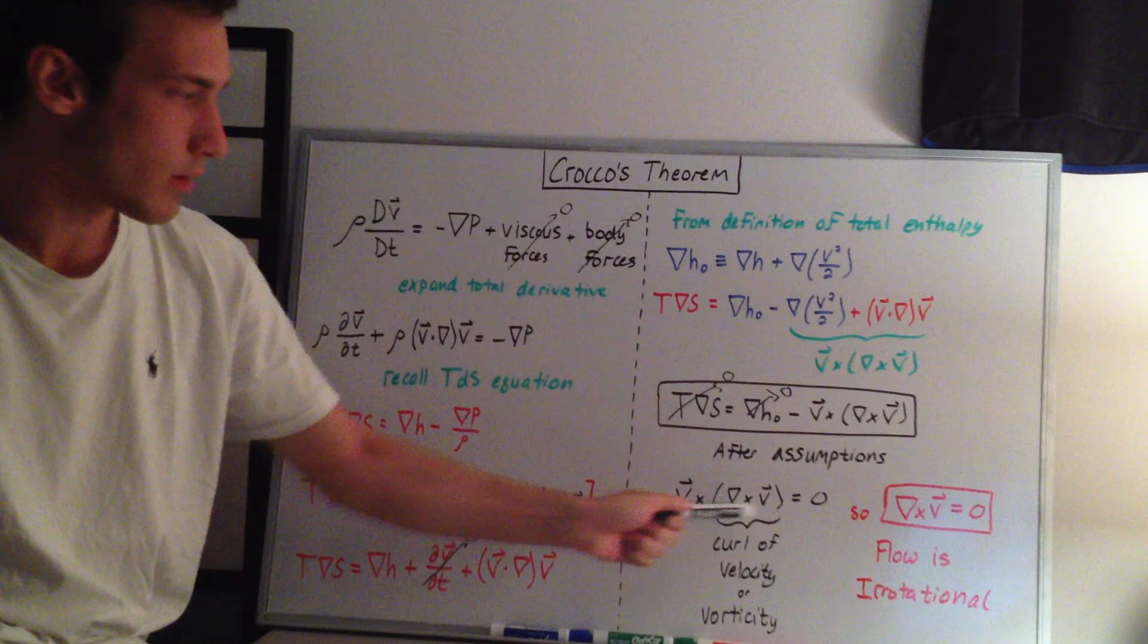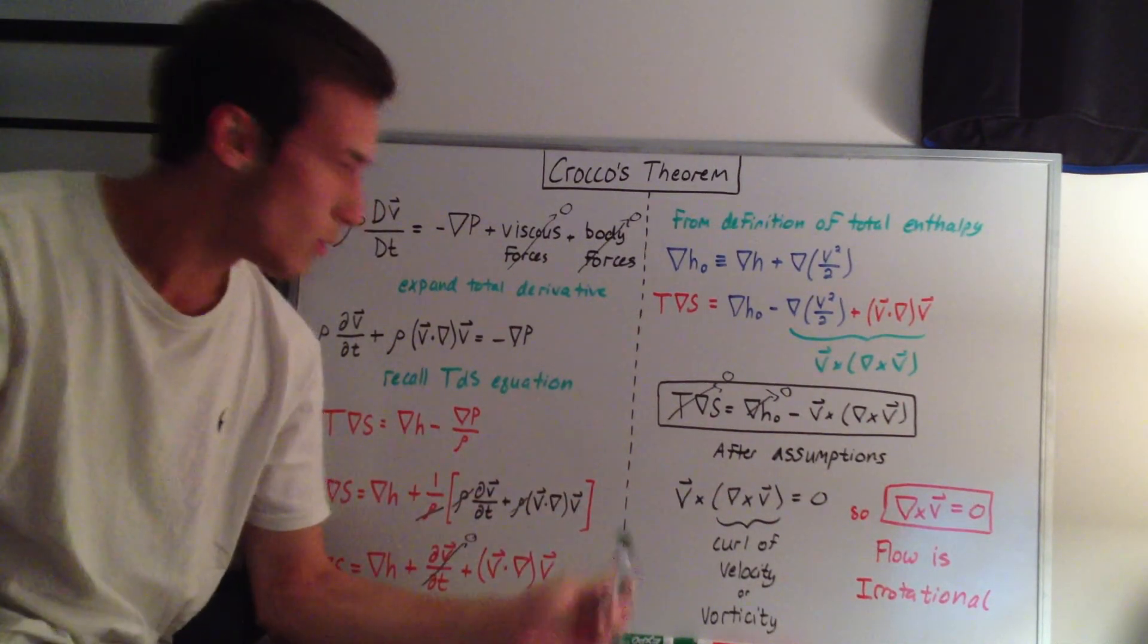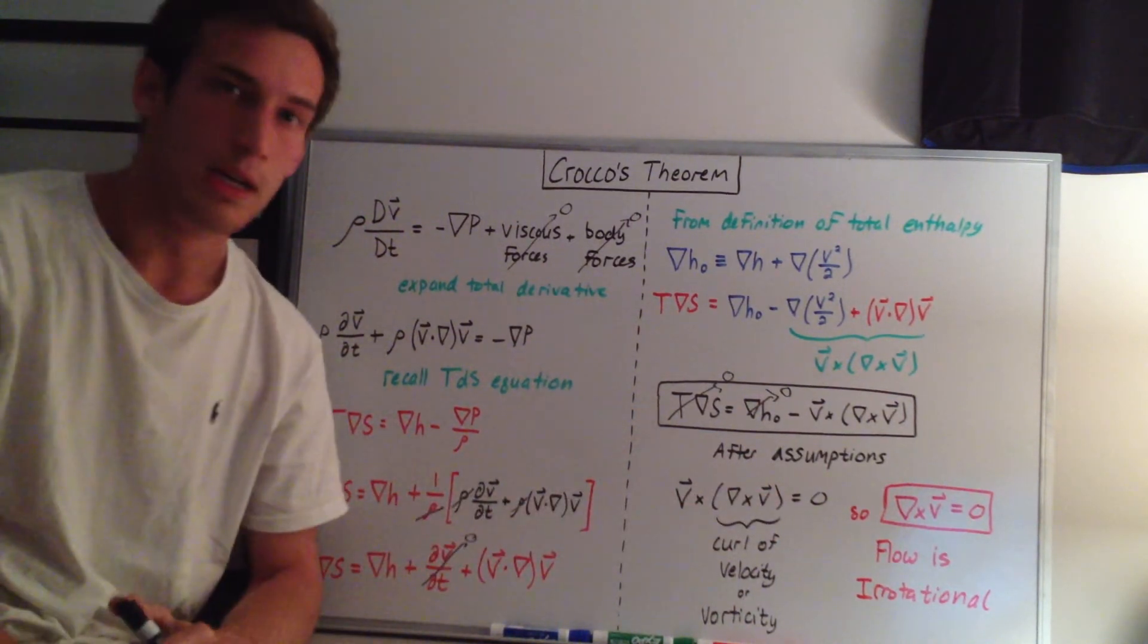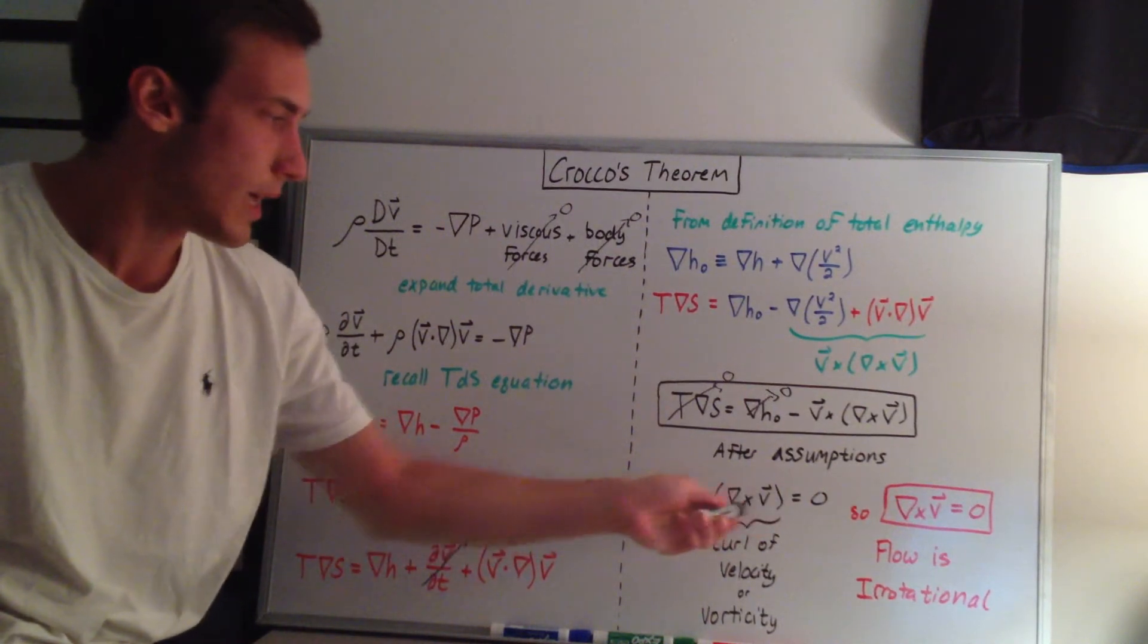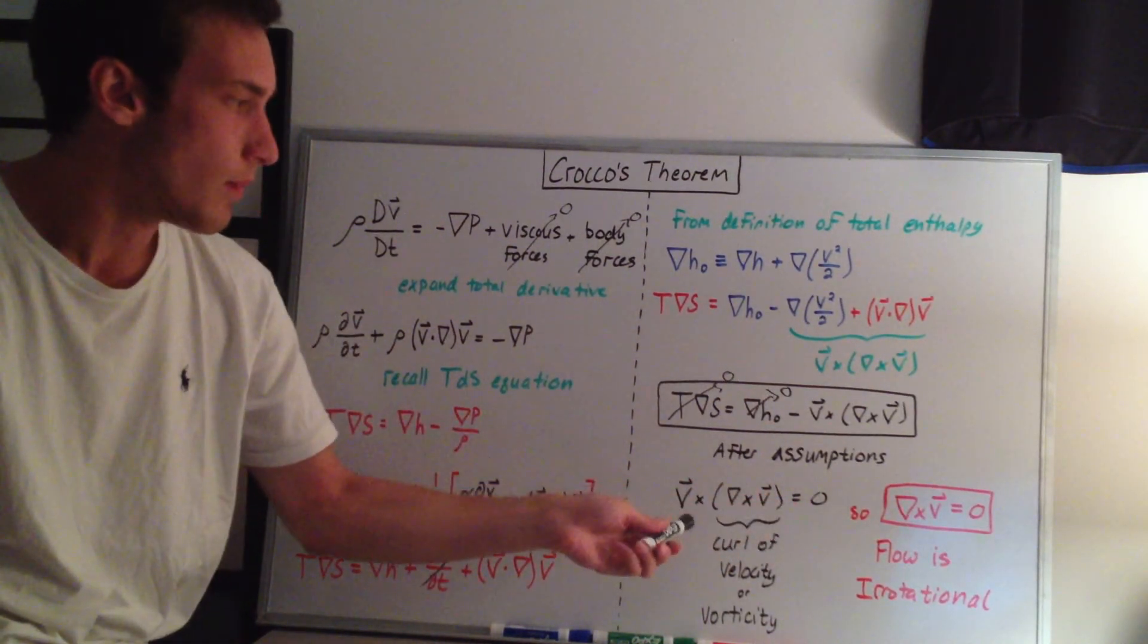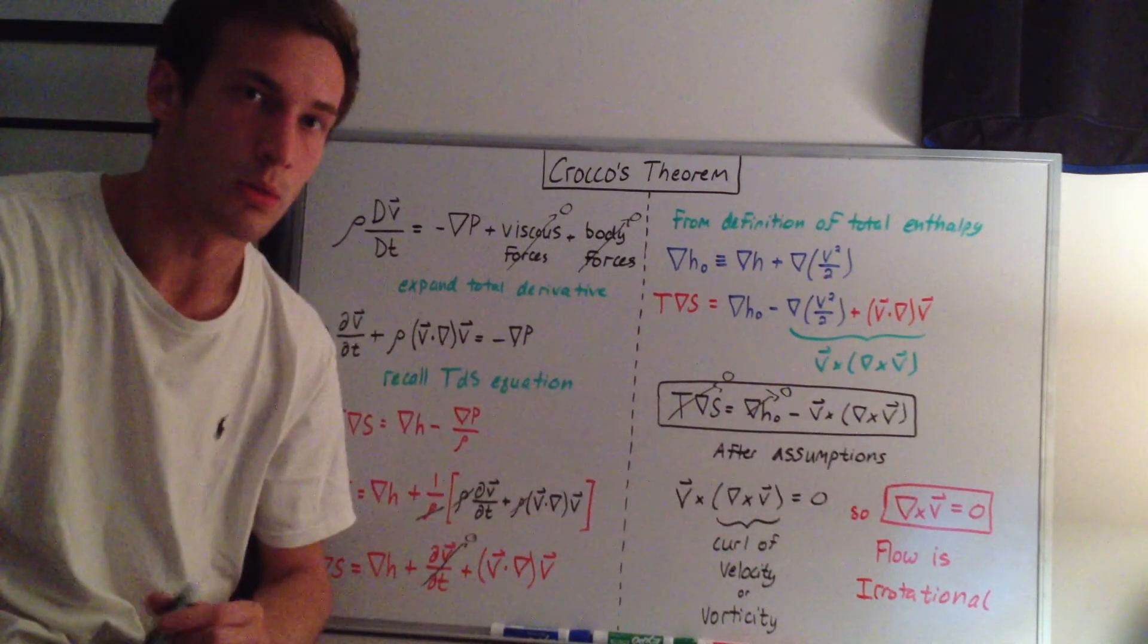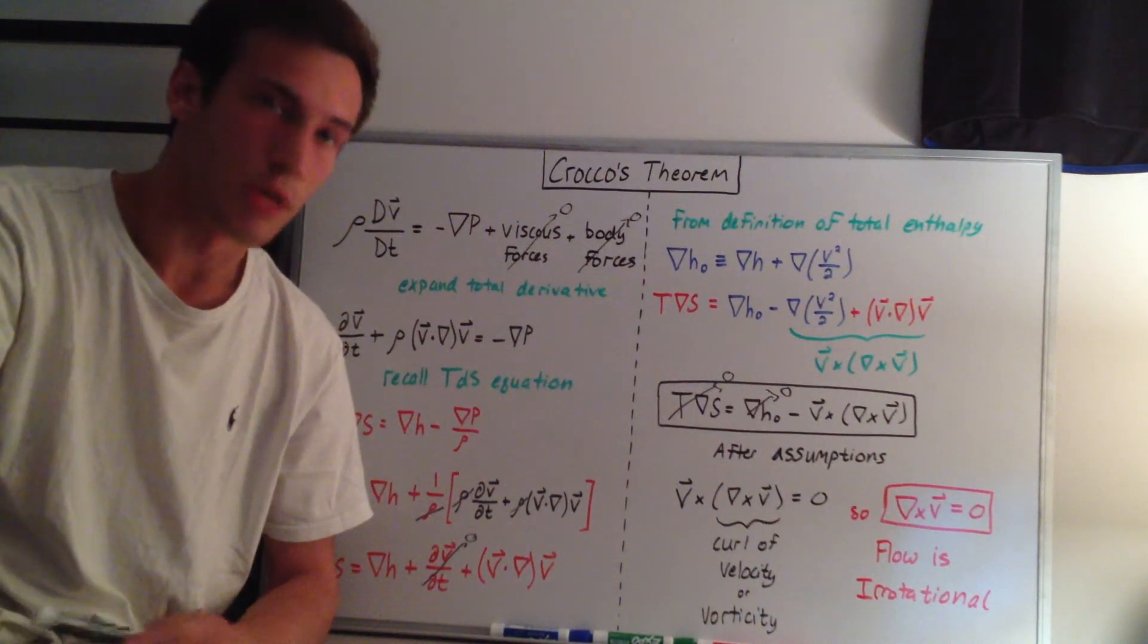Like I said, this term in the parentheses is the curl of velocity, also known as the vorticity. So what this means is, since we're going to have a moving flow, the velocity is going to be non-zero, which means that this term in the parentheses has to be zero for this statement to be true. So we end up with this irrotationality condition, which is the curl of the velocity equal to zero, stating that the flow is irrotational.